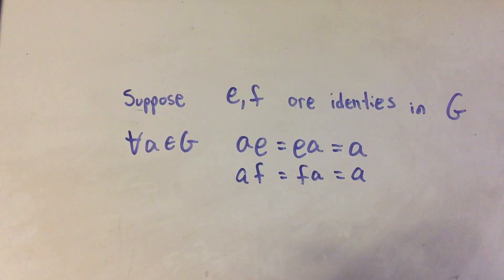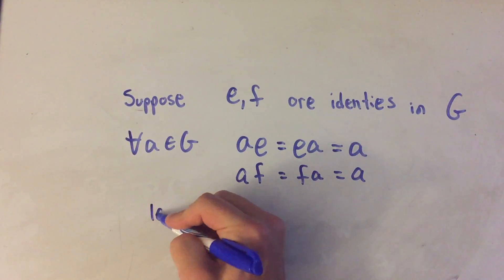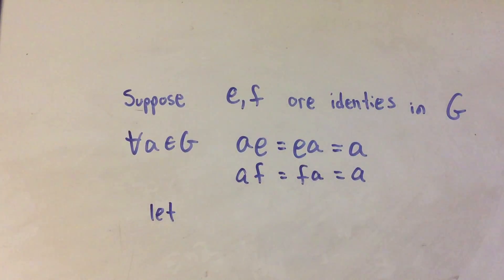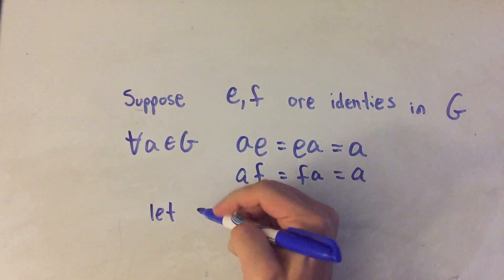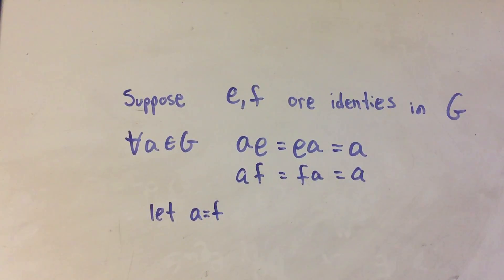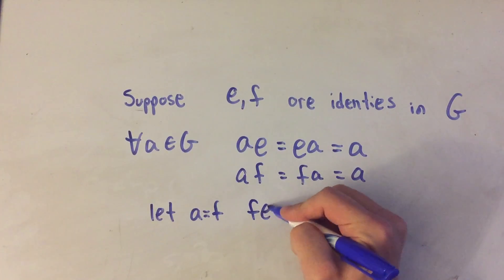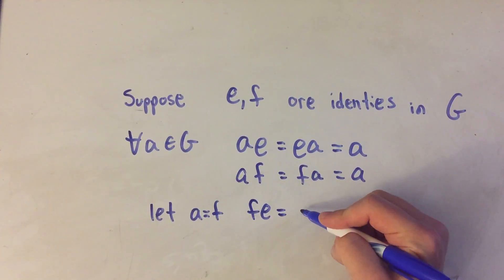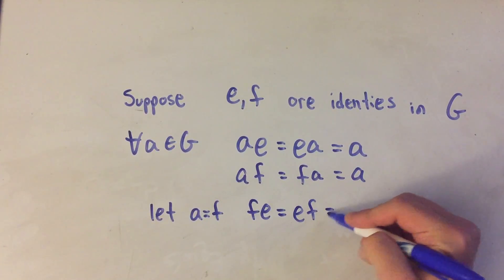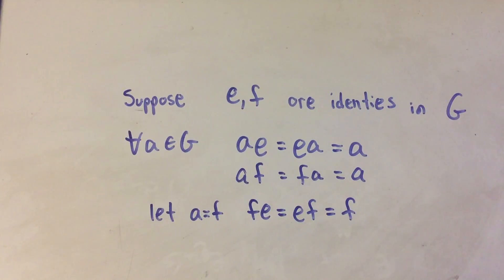Well let me take this first equation. If this is true for any element A in G, let's let A be F. F is an element in G, it happens to be one of the identities supposedly. Well that means this first equation would be F E is equal to E times F which is equal to F. So I'm just letting A equal F in my first equation.